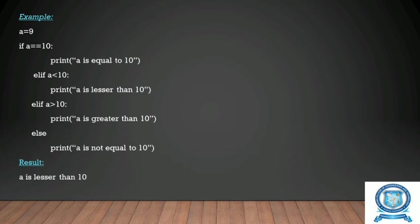Here is an example for the elif statement. a is equal to 9. If a is equal to 10, print 'a is equal to 10'. Elif a is less than 10, print 'a is lesser than 10'. Elif a is greater than 10, print 'a is greater than 10'. Else, print 'a is not equal to 10'. Since a is 9, the first condition is false, but a is less than 10 is true, so we print 'a is lesser than 10'.